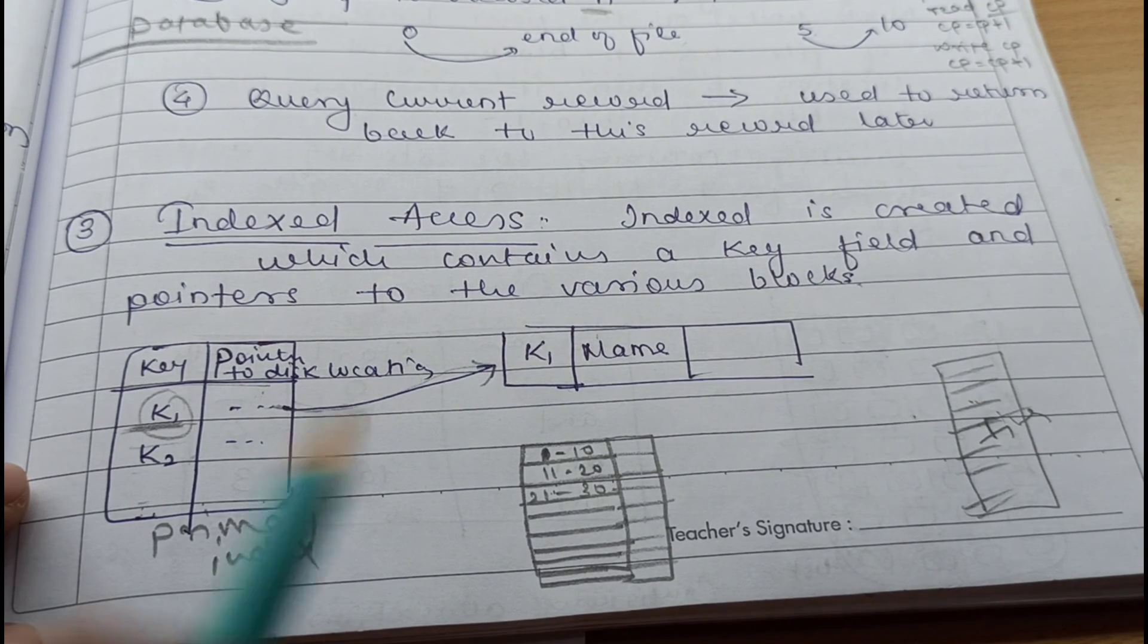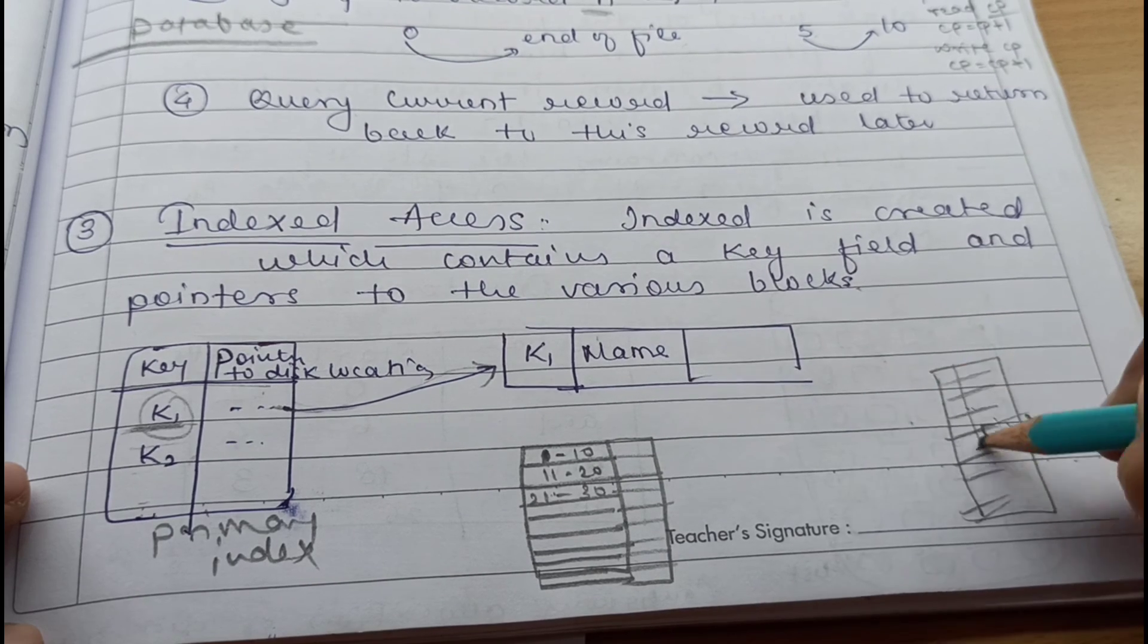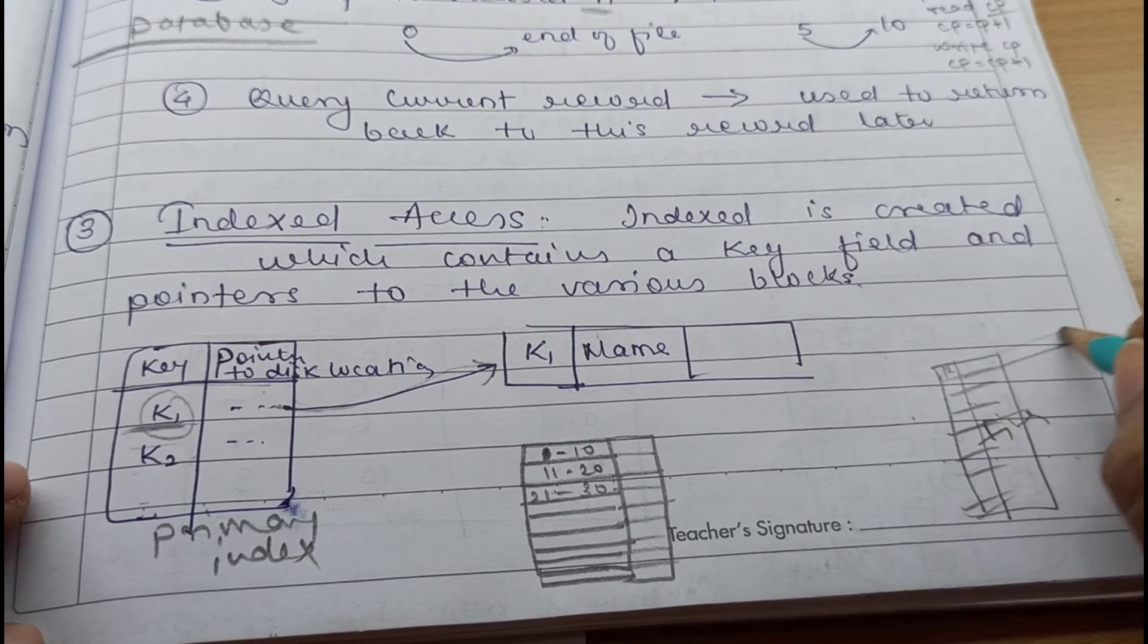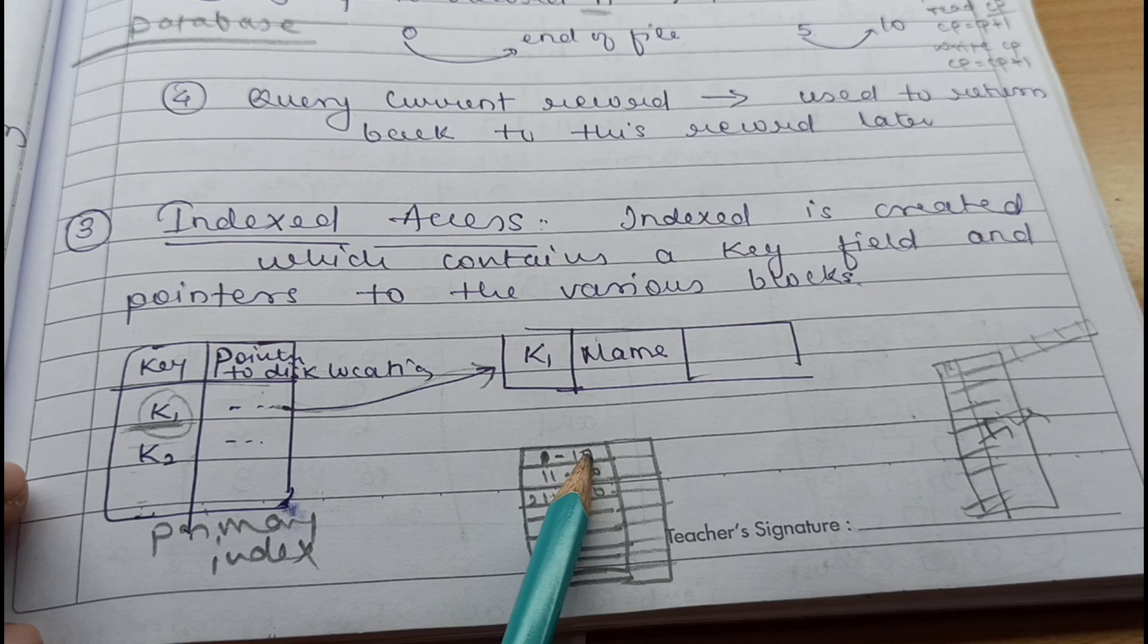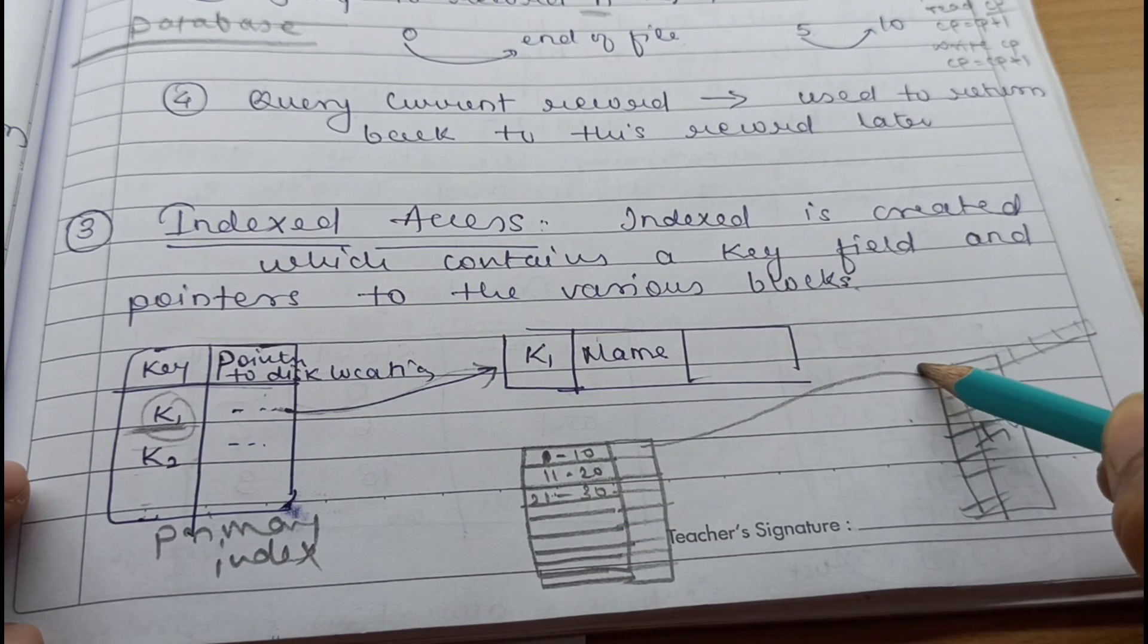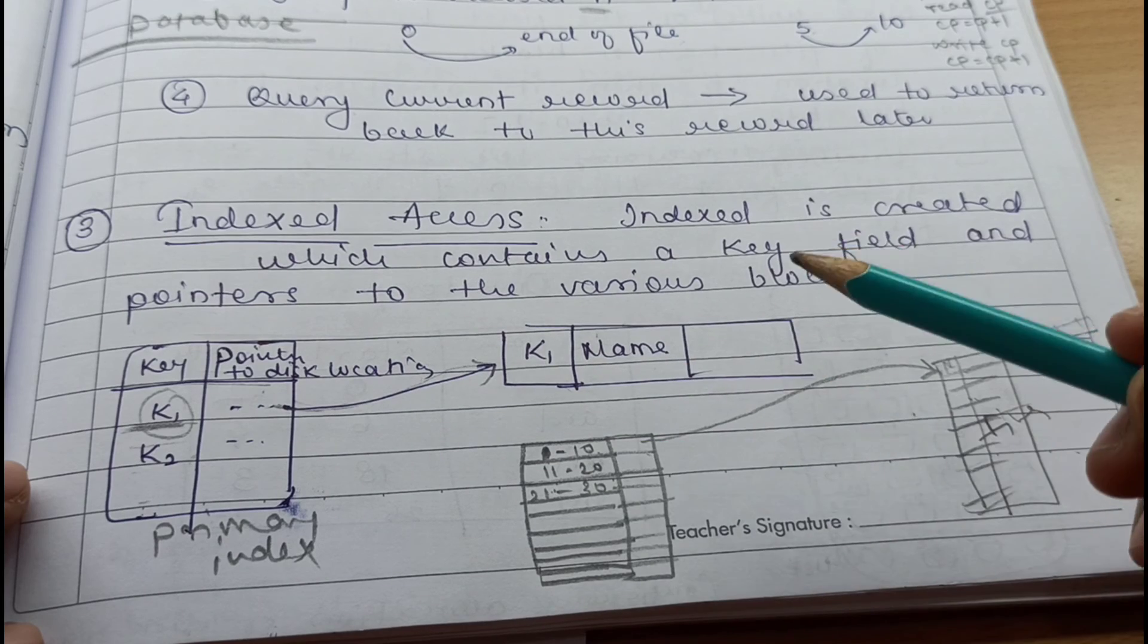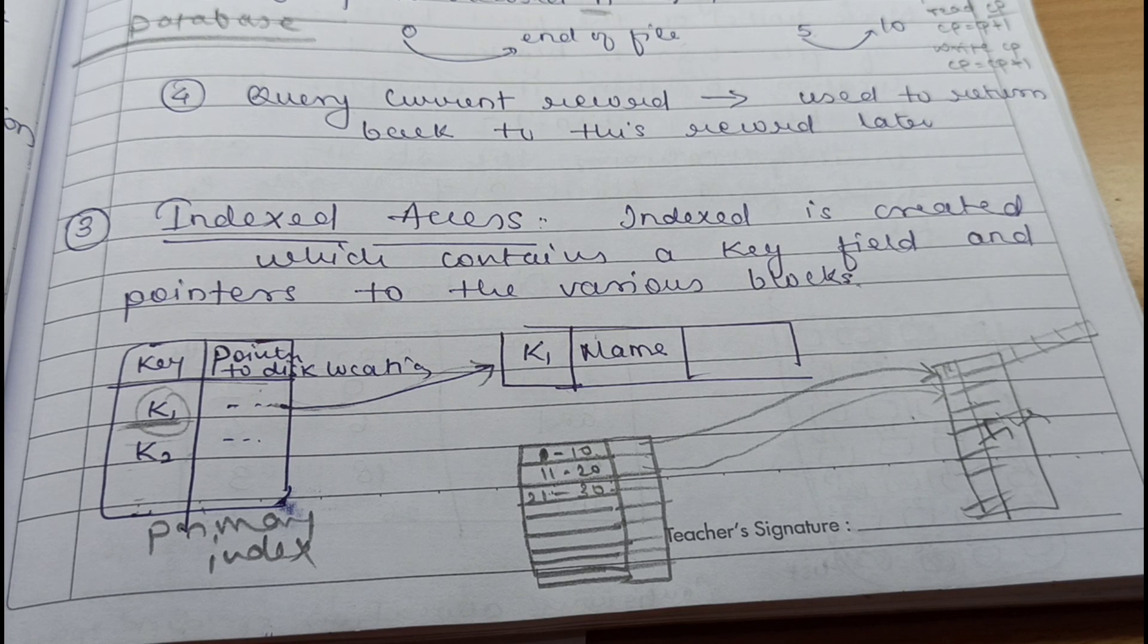In indexed sequential access, the file records are sequential, but within these many files or one file with lots of information, which block contains what is determined by making an index. When you create the index, for example, records 1 to 10 can be found in that file or in that location or in that block, pointing to the disk location of 1st to 10th record, then 11 to 20th record, and likewise. In this way you can find out the data sequentially but in an indexed manner, very fast. You can quickly access data or information stored in the file.